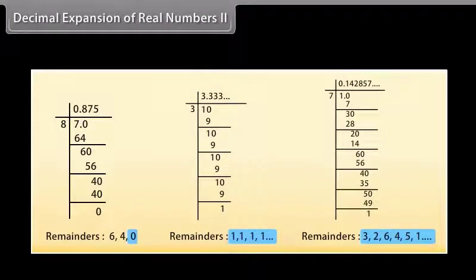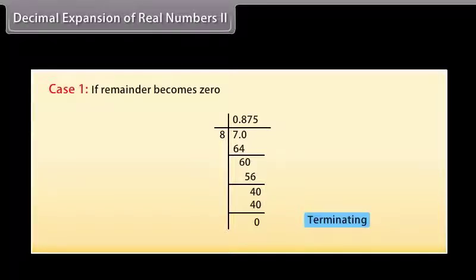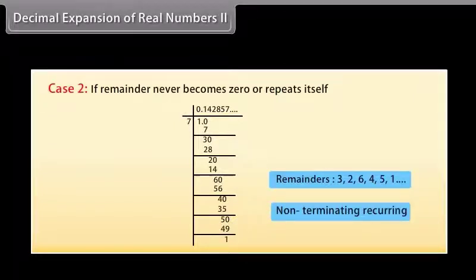Let us go through these cases one by one. Case 1: if the remainder becomes 0, then the decimal expansion ends after a finite number of steps. The decimal expansion of such numbers is terminating. Case 2: if the remainder never becomes 0 but repeats itself, then the decimal expansion of such numbers is non-terminating recurring.